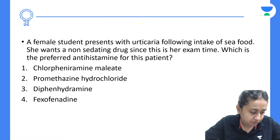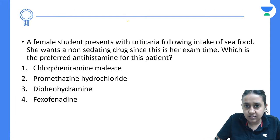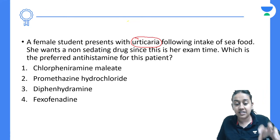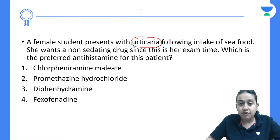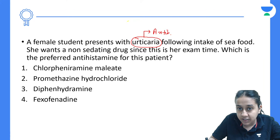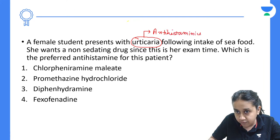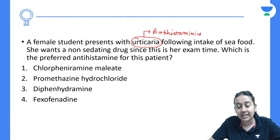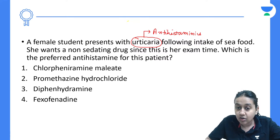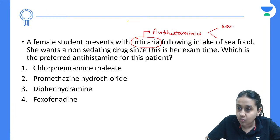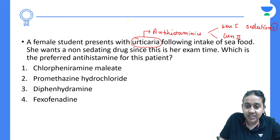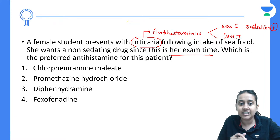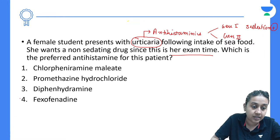Urticaria is a condition where there is accumulation of mast cells in the skin. Antihistaminics are given for these urticaria lesions. They are grouped into two generations. Both have equal anti-itching effect, but sedation is too much in generation one. Since the question asks for less sedation potential, you will prefer a second-generation antihistaminic.